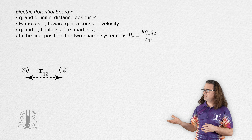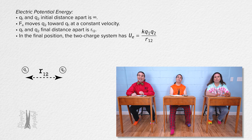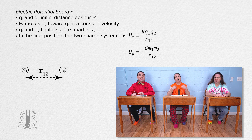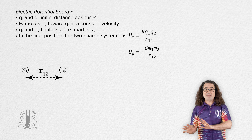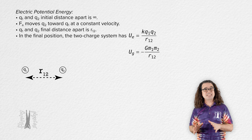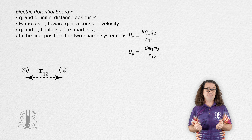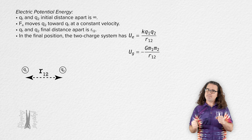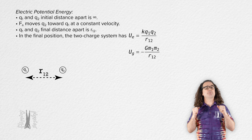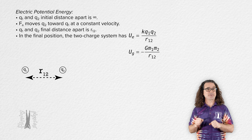Student: Hold up — where did the negative go? This looks very similar to the equation for universal gravitational potential energy but there is no negative. Teacher: I'm glad you recognize the similarities. This equation does not have the negative sign — that is great. But please have a few moments of patience; I will address that very soon.